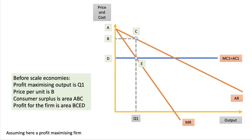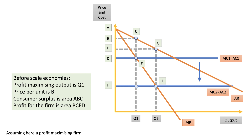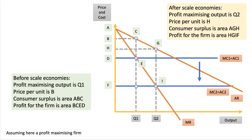I would put in an analysis diagram at this point — you could actually start your answer with one. Here's a diagram showing scale economies. I've simplified things by assuming average cost and marginal cost are the same — a constant returns, constant marginal cost business. The initial profit-maximising price is B and output Q1. If you can achieve economies of scale, that brings down unit costs of production to MC2/AC2. After scale economies, the profit-maximising output expands to Q2, and you charge price pH. As a result, there's a bigger level of consumer surplus, shown by area AGH, and also a higher profit for the firm equal to area HGIF. It's a good diagram because it shows economies of scale and the impact on price, output, profit, consumer surplus, and producer surplus — two important aspects of welfare.